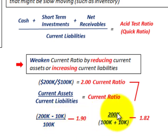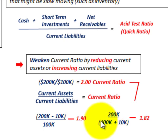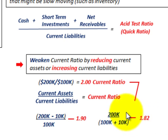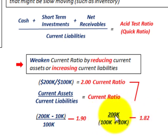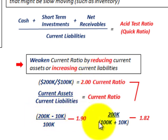In the other case, current assets remain the same at $200,000, but current liabilities actually increase. By increasing our current liabilities, we come up with a current ratio of 1.82 — again weakened. So we've weakened our current ratio by either reducing our current assets or increasing our current liabilities.